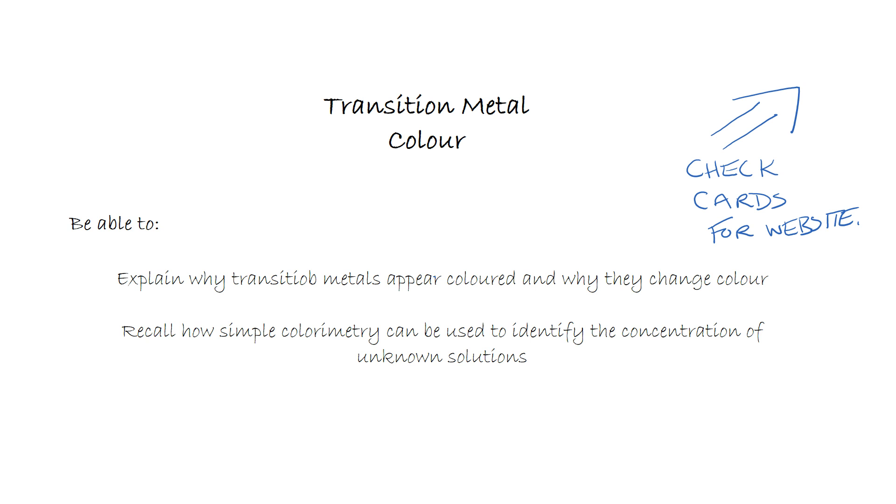So by the end of this lesson you should be able to do the following: explain why transition metals appear coloured and why they change colour, and recall how simple colourimetry can be used to identify the concentration of unknown solutions.